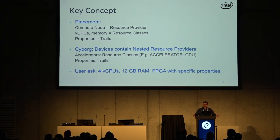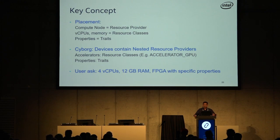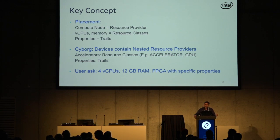With Nova and placement, we represent compute nodes as resource providers, and the resources they provide are CPU and memory. You can represent properties of compute nodes as traits in placement — for example, if you've got hugepages or any other special properties, they become traits. Along the same lines, we want to represent devices as resource providers, with the accelerators within them as resource classes. This device resource provider will be nested within the compute node resource provider, forming a tree. The notion of nested resource providers has been taking shape over the Queens and Rocky cycles, and is more or less there now — we intend to leverage that to represent devices.